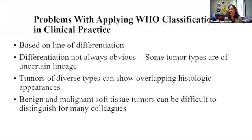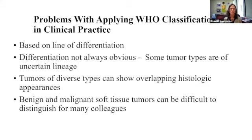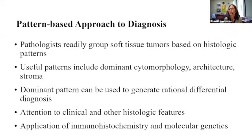The trouble is that if you use the traditional World Health Organization classifications in clinical practice, it is of course based on line of differentiation, but differentiation is not always obvious. Tumors with very diverse differentiation can have strikingly overlapping histologic features. And because there are about 300 soft tissue entities, it can be very difficult for colleagues who don't see a lot of this stuff to distinguish benign and malignant.